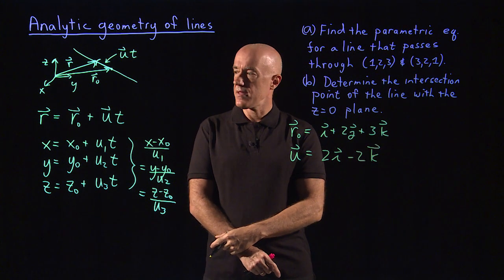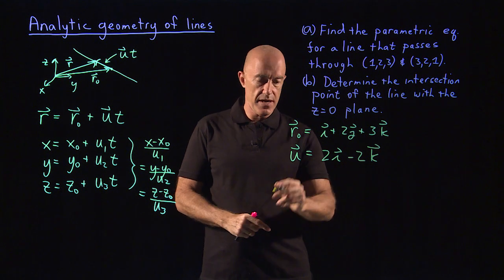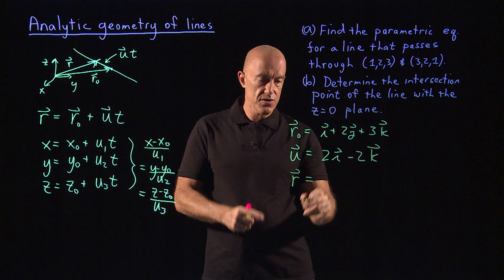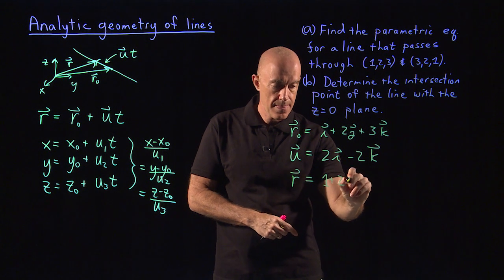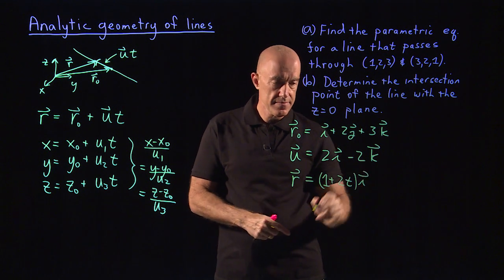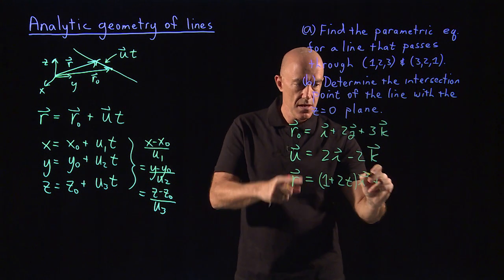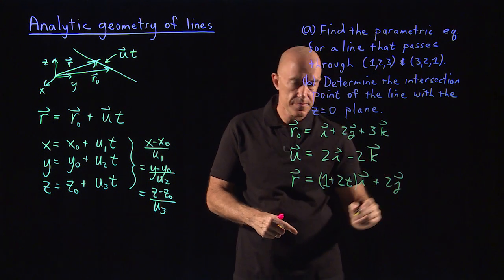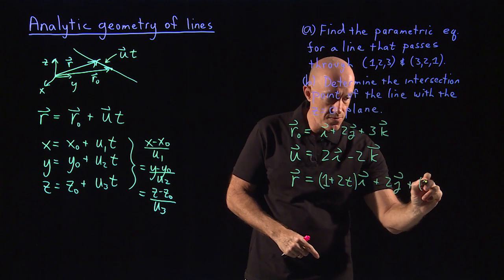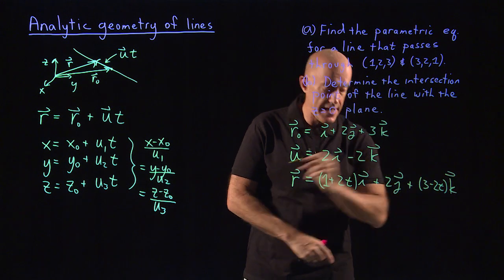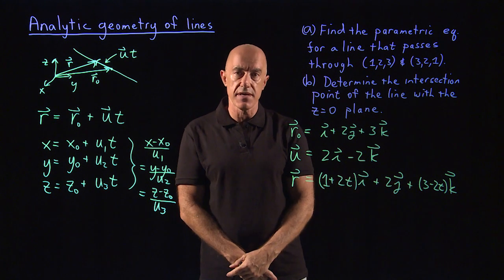Putting it together, r = r0 + u·t gives us r = (1 + 2t)i + 2j + (3 − 2t)k. This is the parametric equation for the line in three-dimensional space. We can get to any point on the line by varying the parameter t.